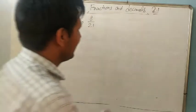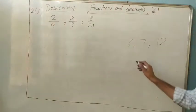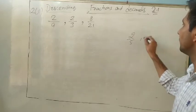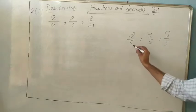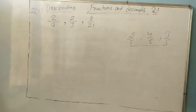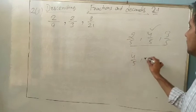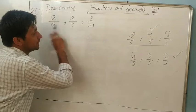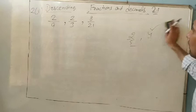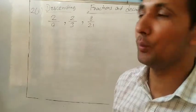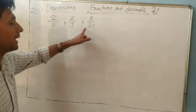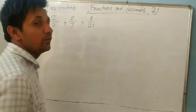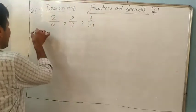If we had whole numbers like 6, 7, and 12, descending order would simply be 12, 7, 6. With fractions having the same denominator — like 2/5, 4/5, 3/5 — we compare numerators directly: descending order is 4/5, 3/5, 2/5. But when denominators are different, we must first make them the same by finding the LCM and creating equivalent fractions.